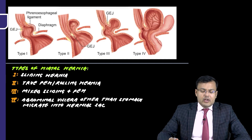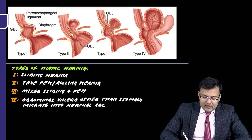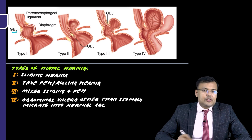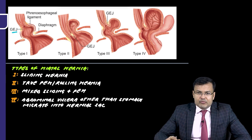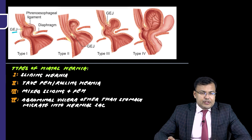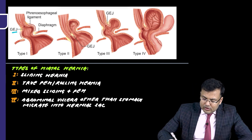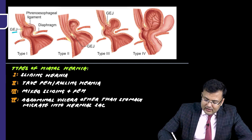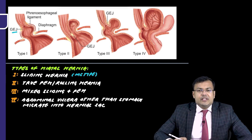The types of hiatal hernia. Here you can see Type 1. Type 1 hiatal hernia is known as sliding hernia. There is herniation of the GE junction upwards. The most common type of hiatal hernia is Type 1, that is sliding hernia, and in this case there is herniation of the GE junction.